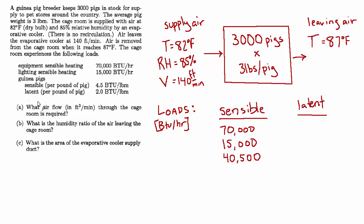And then there's also a latent component. These pigs are mammals, just like you and me, so there's perspiration and respiration, and that creates a latent load in the space. So that's 2 BTUs per pound, again, times 9,000 pounds. So that's 18,000 BTU per hour of latent load. So let's total that up. Sensible is going to be 125,500, and the latent is just the 18,000. That's the only latent load is from the pigs themselves.